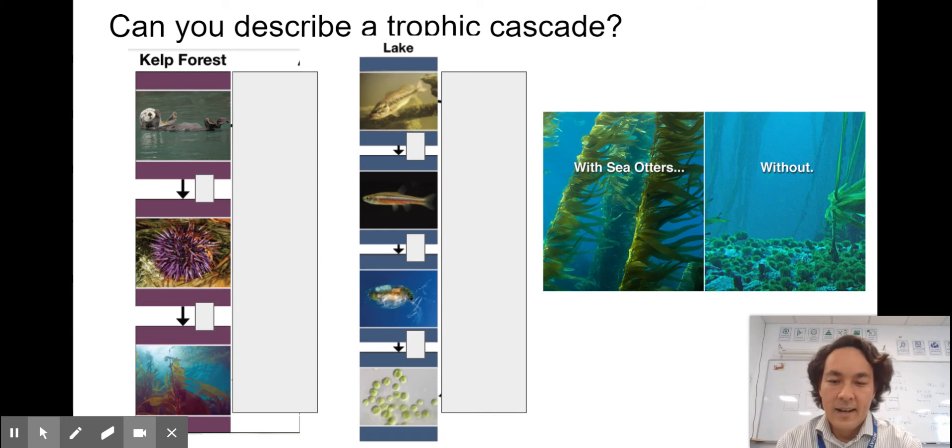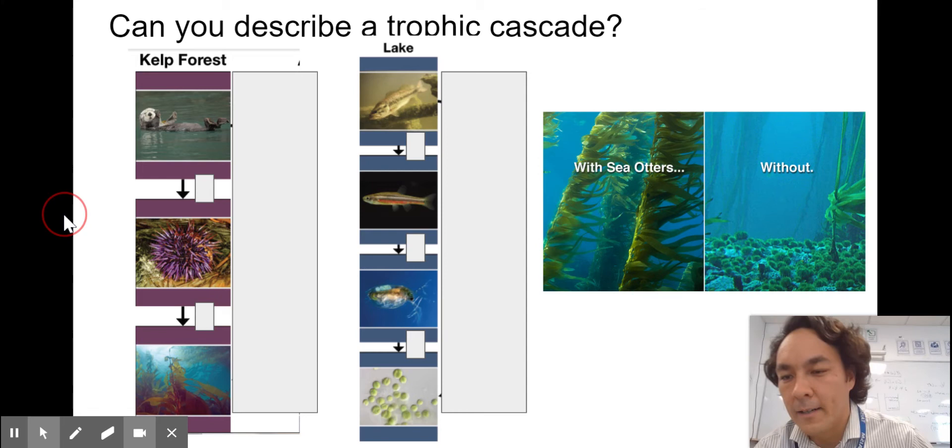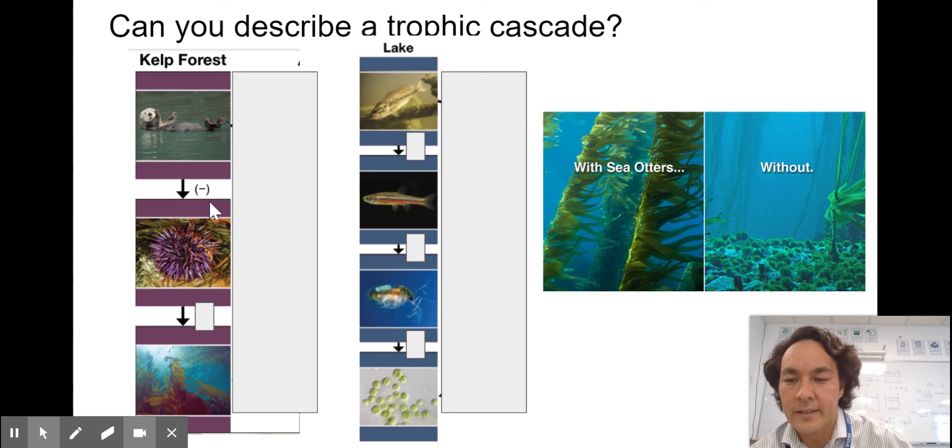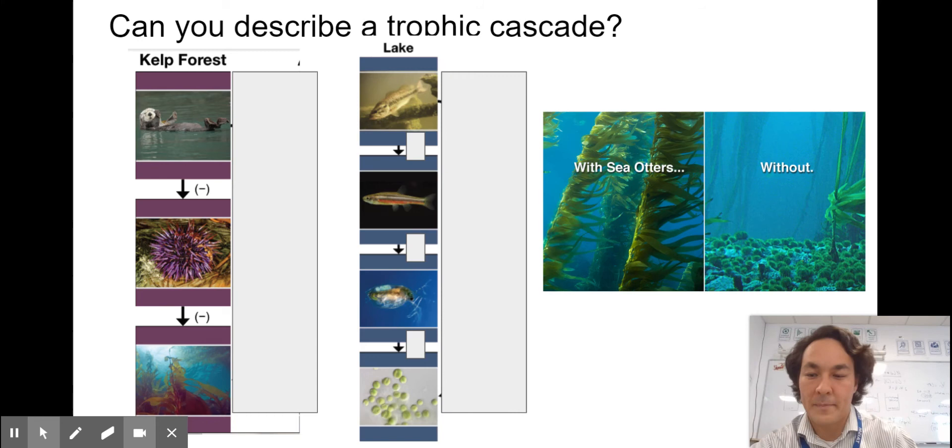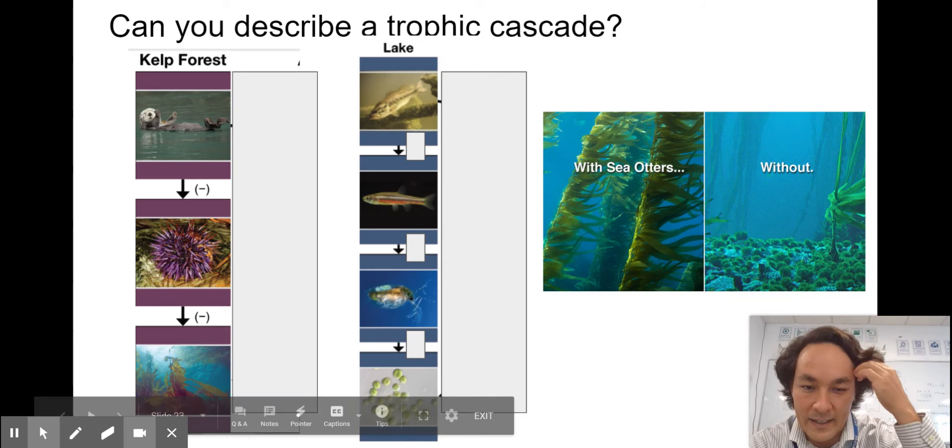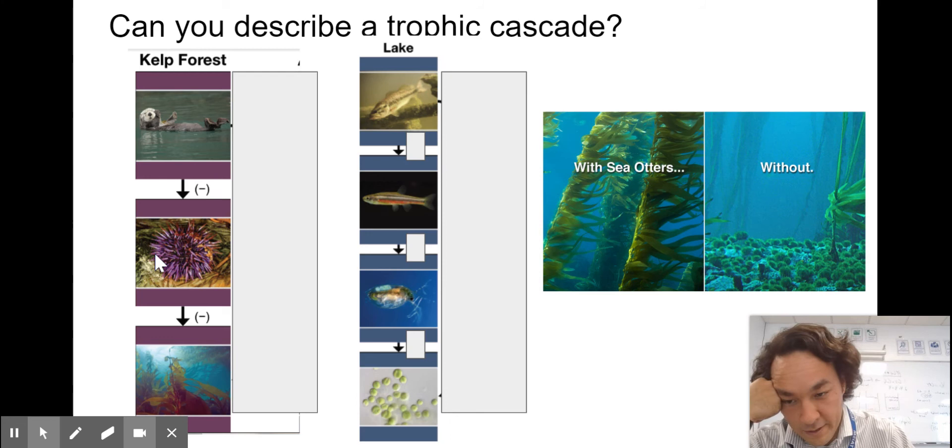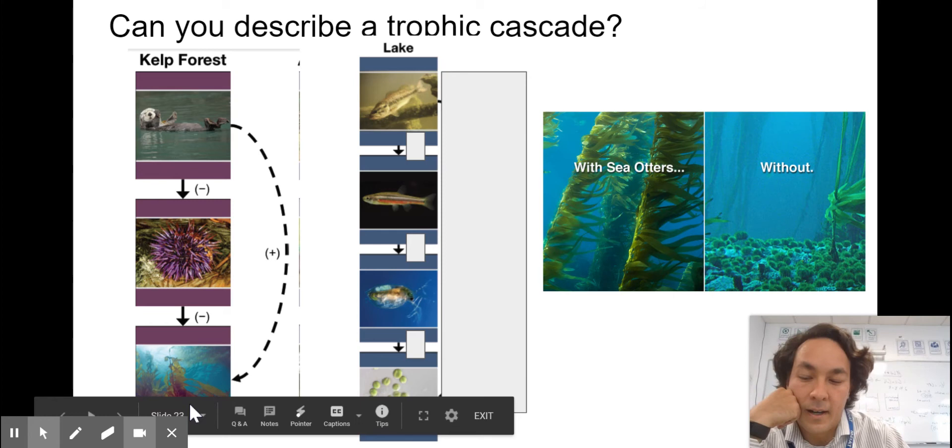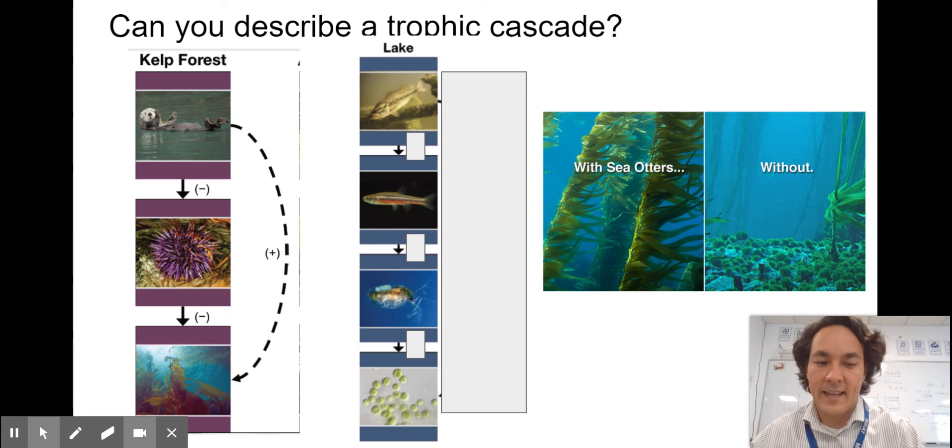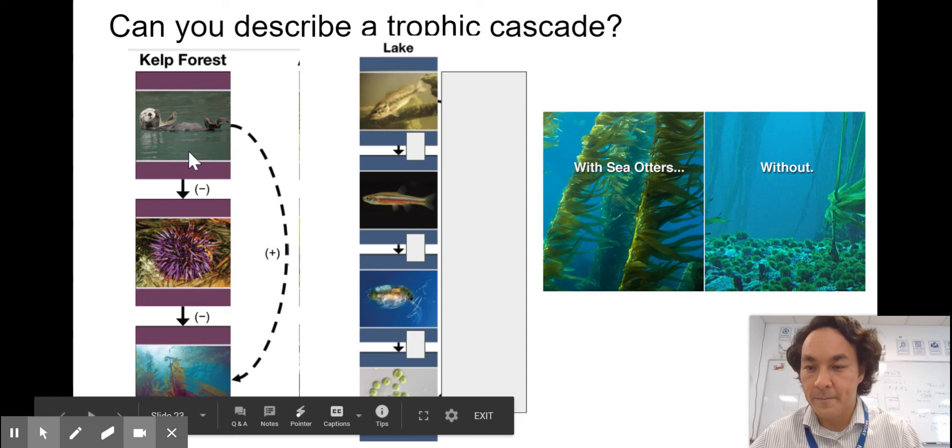Can you describe a trophic cascade? You all did a really good job on this in class. Here at the kelp forest, these otters are going to eat the urchins, so it's going to decrease the number of urchins. The urchins are going to eat the kelp, so it's going to decrease the number of kelp. Notice how this is not a food chain represented here. This is a trophic cascade diagram.